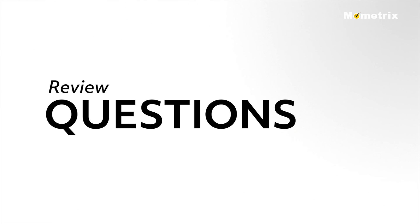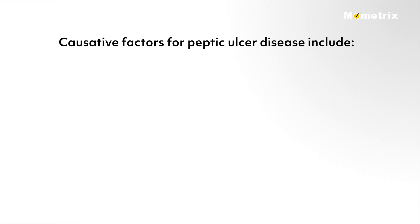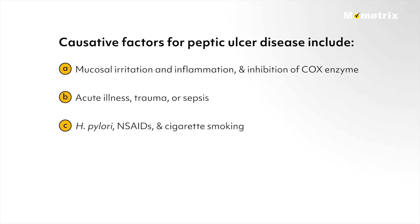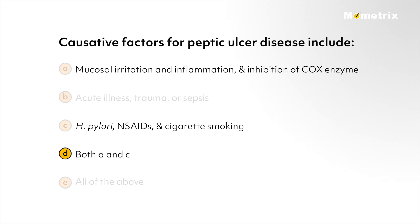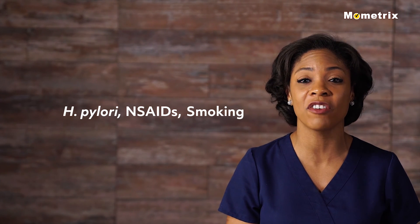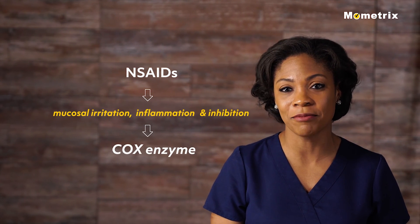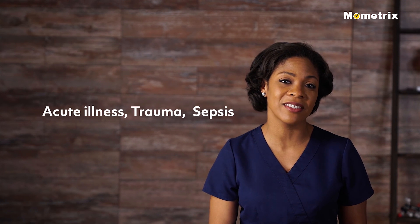Causative factors for peptic ulcer disease include: A) mucosal irritation and inflammation and inhibition of COX enzyme; B) acute illness, trauma, or sepsis; C) H. pylori, NSAIDs, and cigarette smoking; D) both A and C; or E) all of the above. If you chose D — both A and C — you're correct. H. pylori, NSAIDs, and smoking are all factors in the development of peptic ulcer disease, and NSAIDs cause mucosal irritation, inflammation, and inhibition of COX enzyme. Acute illness, trauma, and sepsis are causative factors in stress ulcers.